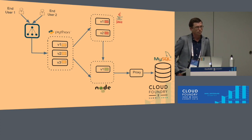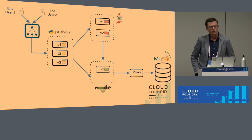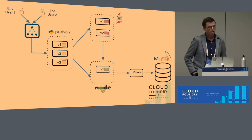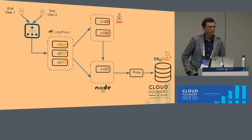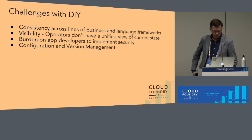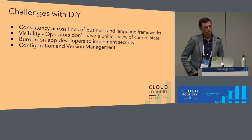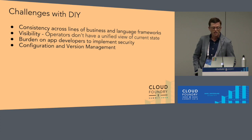A common way that these concerns are being addressed today is that each application developer is left to solve them themselves. All application developers solve them over and over, and across large portfolios of applications they're not always solved the same way. It's difficult to have visibility into whether these are solved in a consistent way. The colored boxes here represent either custom code or libraries that application developers are leveraging to solve these problems. A problem with this pattern is consistency.